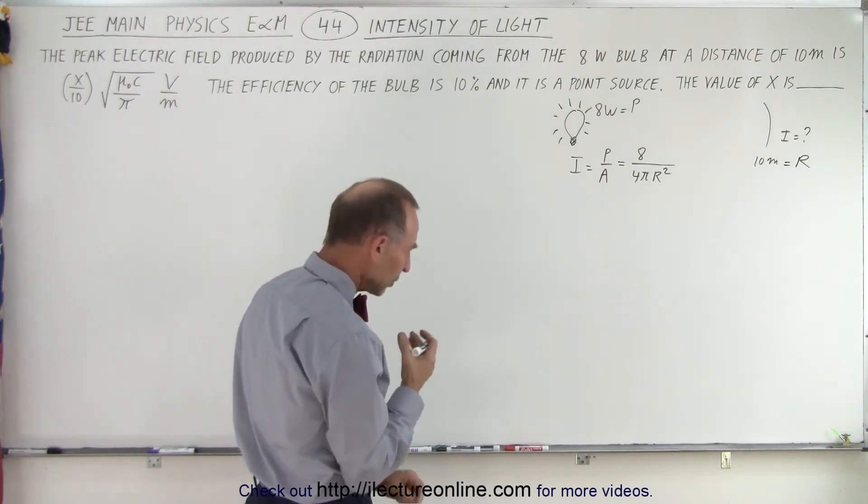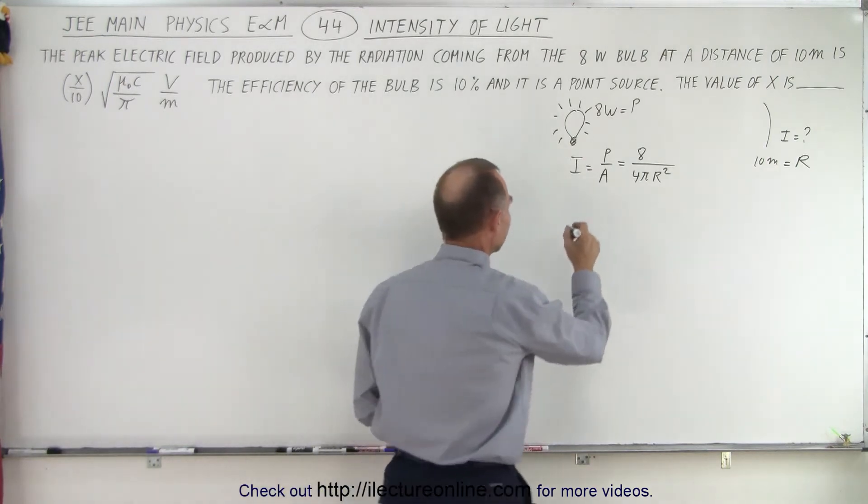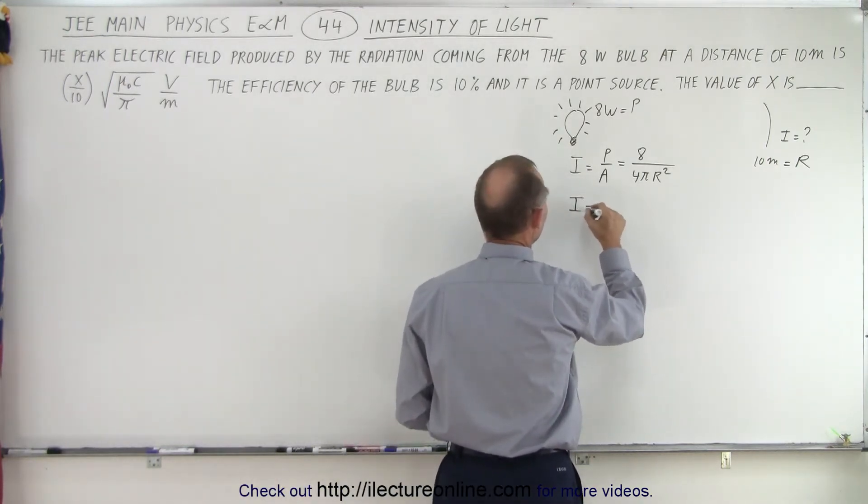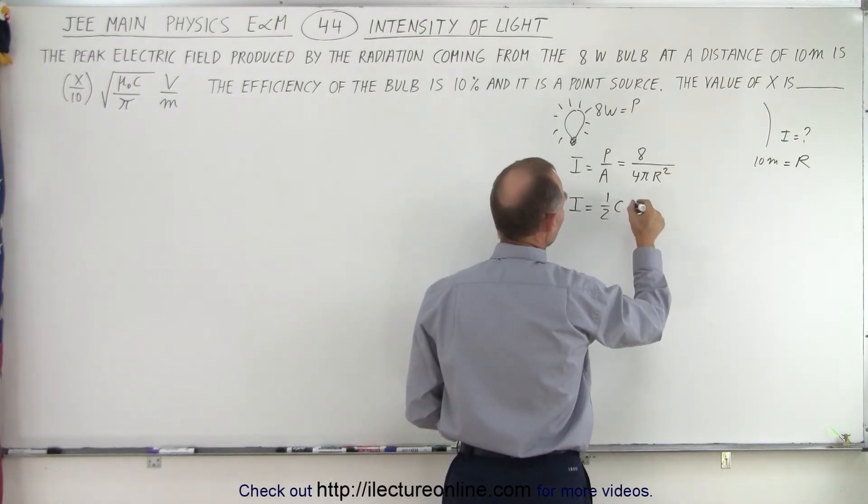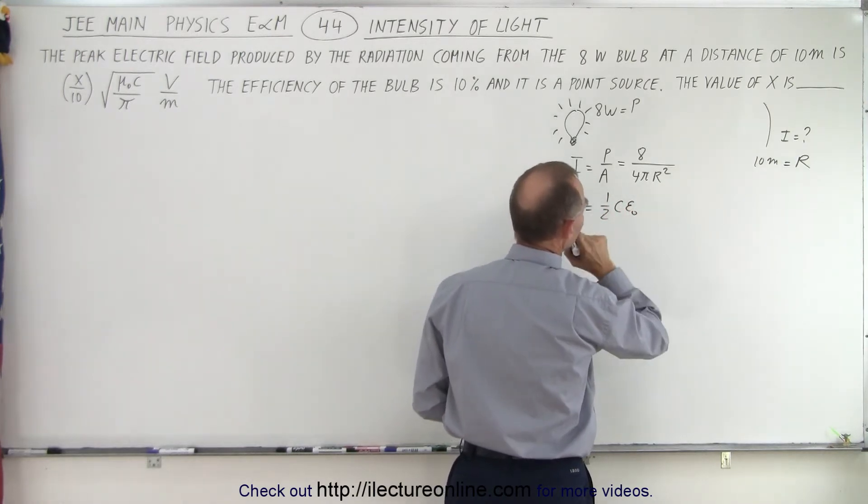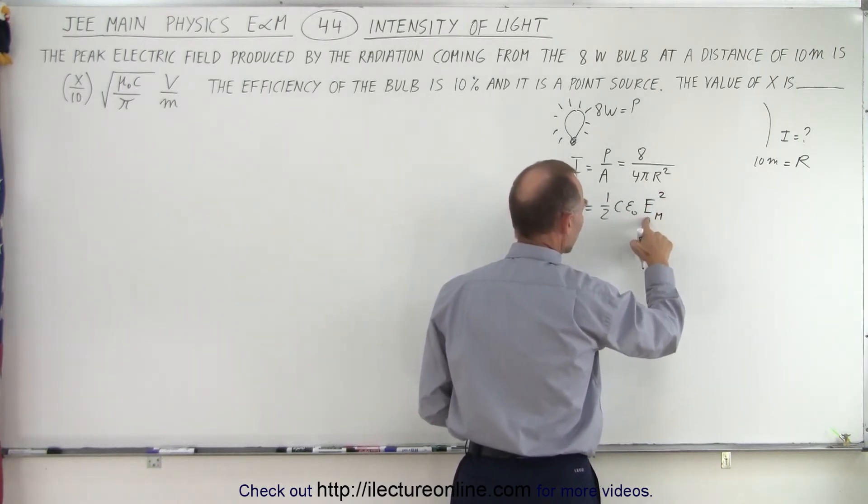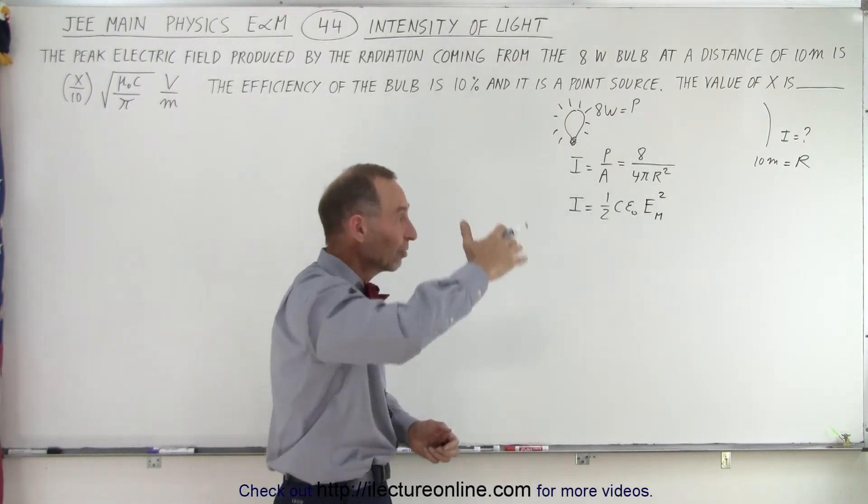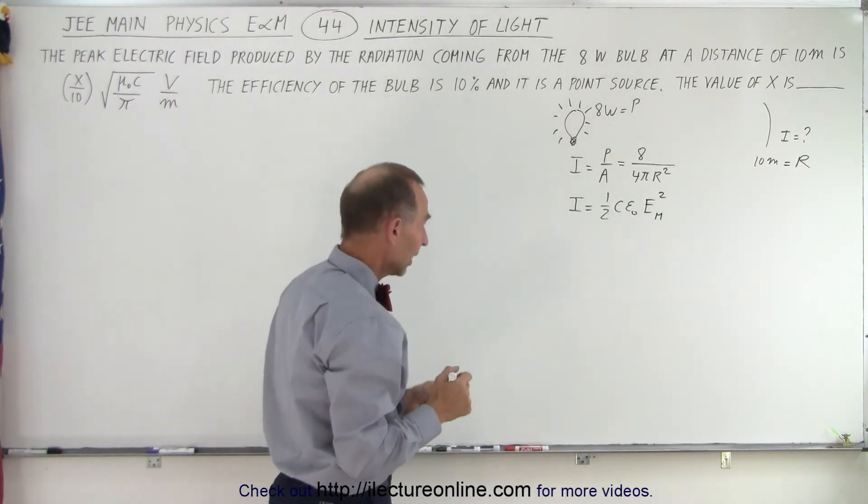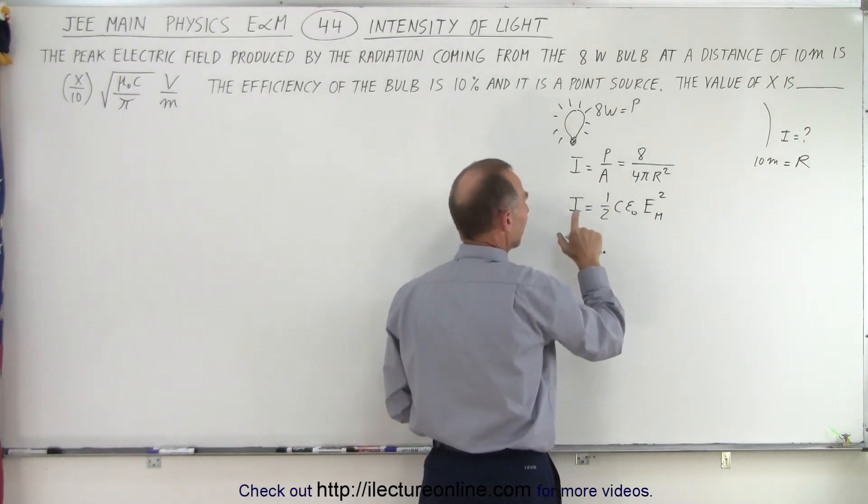The next thing we want to do is relate the intensity to the electric field strength. And we know that the intensity of light is equal to 1 half times c epsilon sub naught times e max squared. That's the maximum electric intensity, electric field intensity of the oscillation of the electric field of the light. And if we use the maximum squared we need to put a 1 half in there and that gives us the intensity right here.